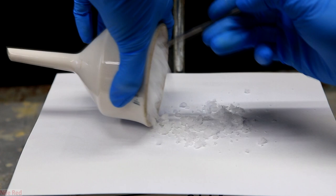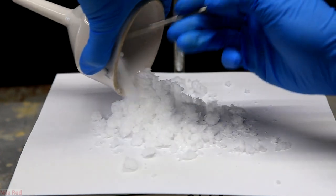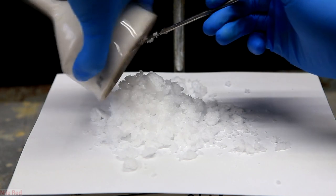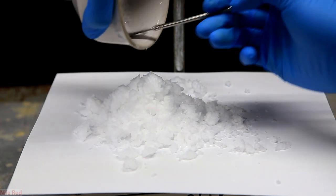I scraped out all of the salt from the Buchner funnel and this is the final yield. Based on the amount of ammonium carbonate used, the yield should be quantitative. Or in other words, it should be pretty much 100%.